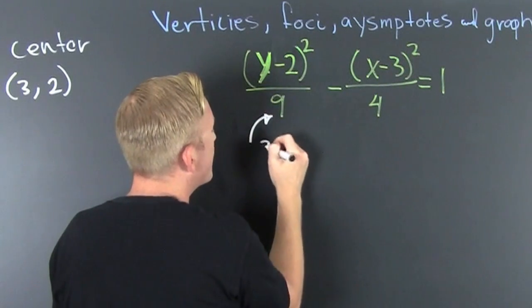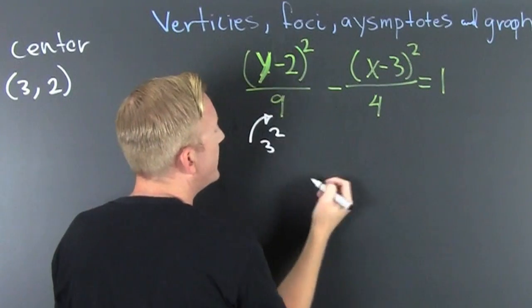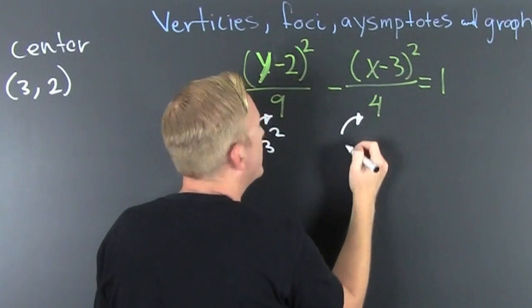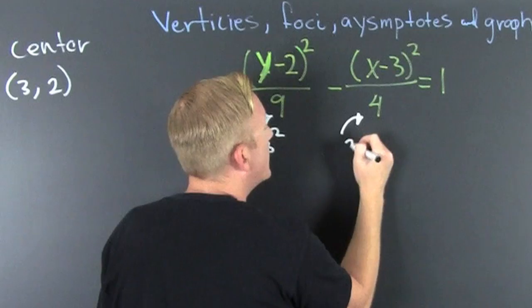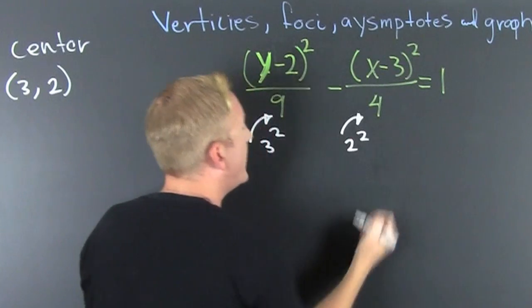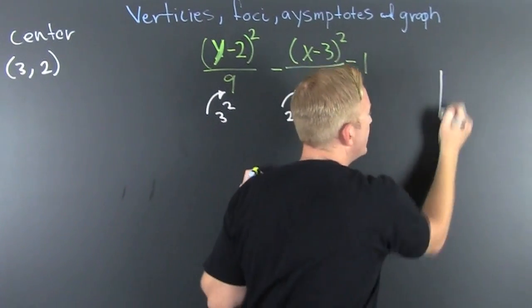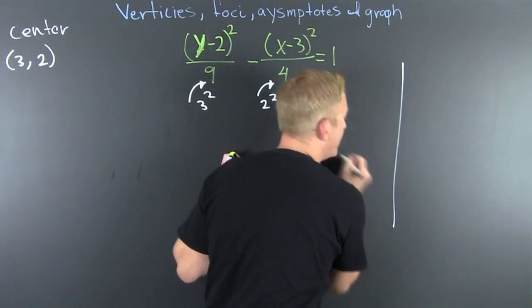We need our big one and our other one. The big one b is going to be 3 squared, and the other one a is 2 squared.